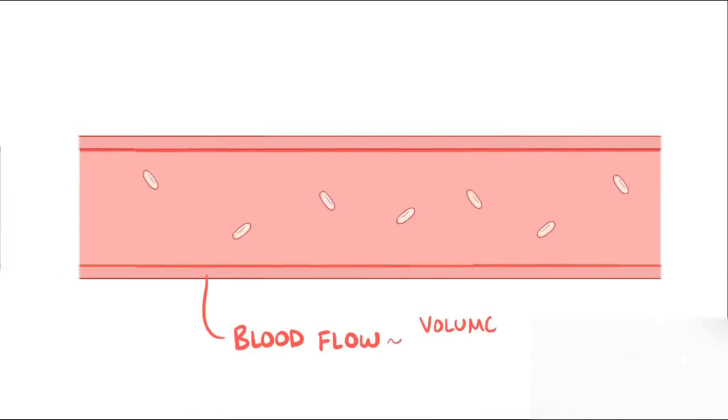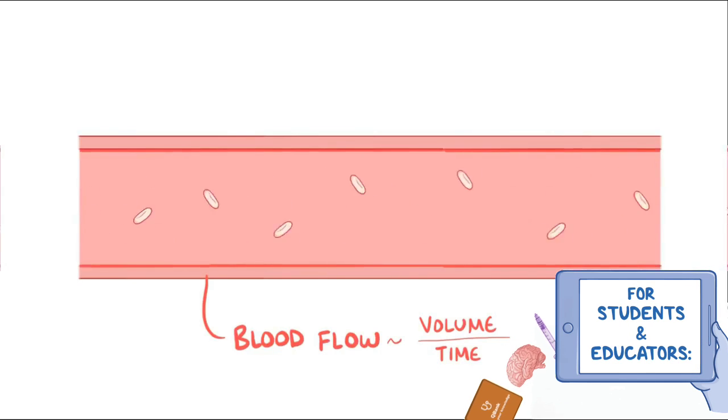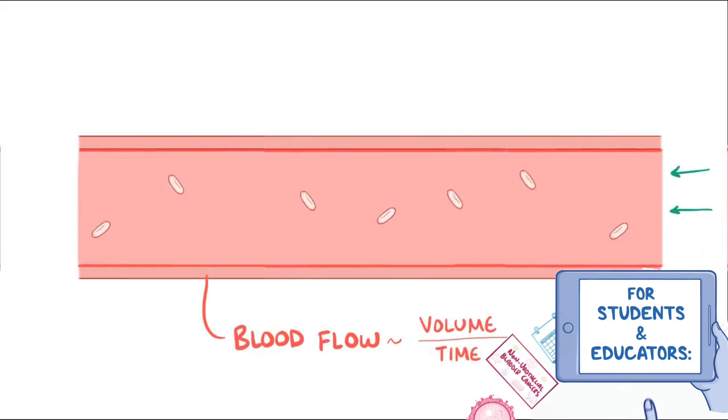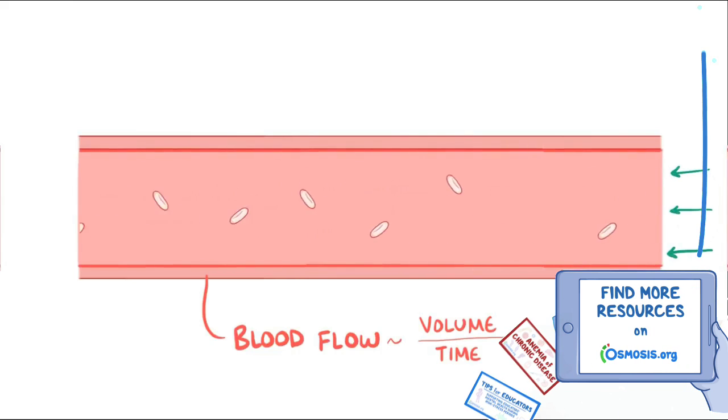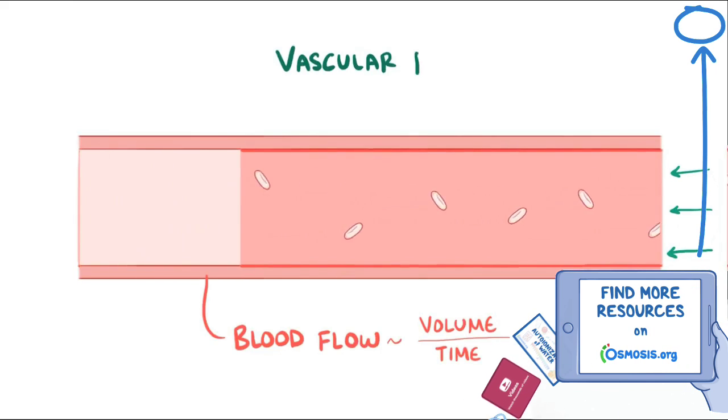Blood flow refers to the volume of blood traveling through a blood vessel, an organ, or the entire body over a period of time, and it can be measured as liters per minute. As that blood flows, it encounters various factors that resist flow and movement of blood, known as vascular resistance.